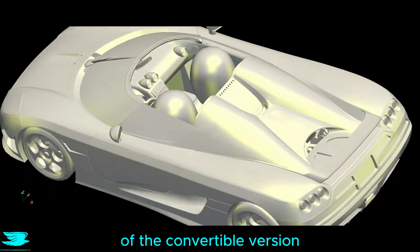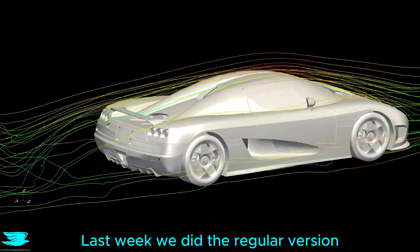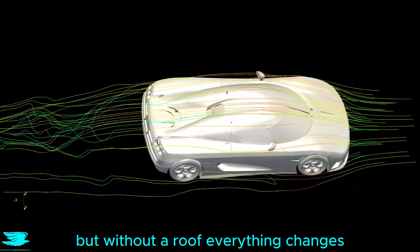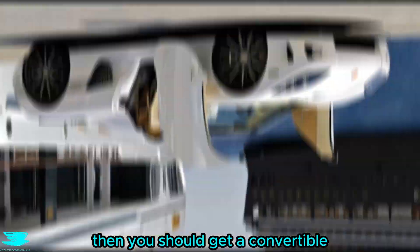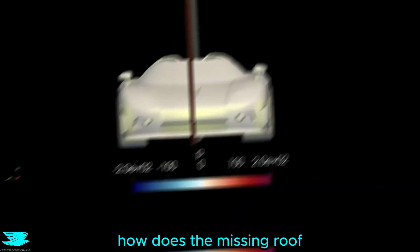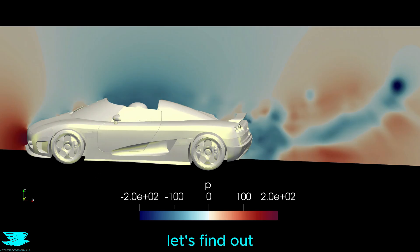This is the aerodynamics of the convertible version of the Koenigsegg CCX. Last week we did the regular version, but without a roof everything changes. And if you're going to get a seg, then you should get a convertible so everyone can see how happy you are. How does the missing roof affect the aerodynamics? Let's find out.